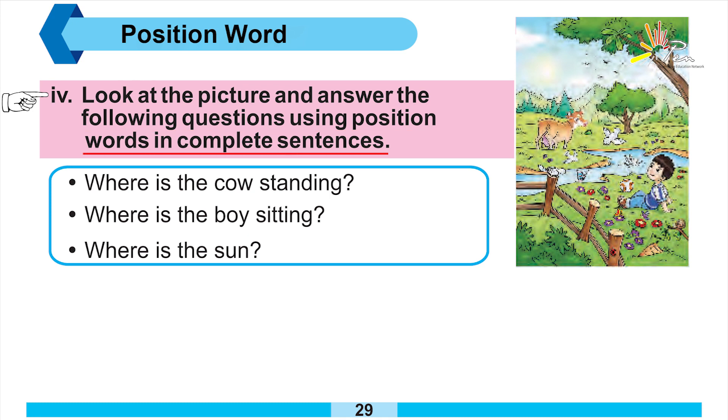So, here we have some sentences given and in front of a picture we can see that a child is sitting on the grass. He has water, he has a lake, he has a fence. There's a cow that is standing there. It's a sunny day because we can see the sun in the picture.